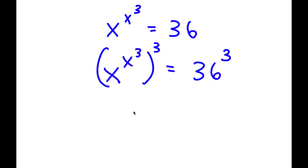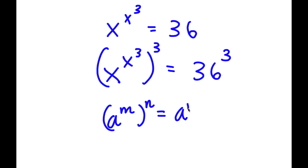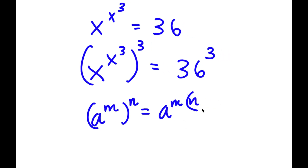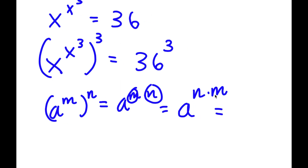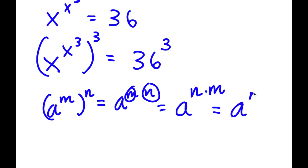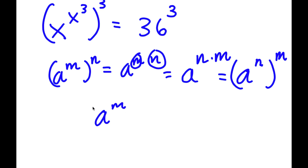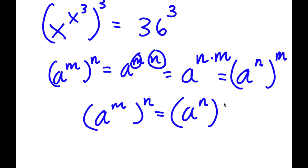Now, if I have something in the form a to the power of m to the power of n, this is equal to a to the power of m times n. And m and n here are interchangeable, meaning this is also equal to a to the power of n times m. So a to the power of m to the power of n equals a to the power of n to the power of m — in simpler terms, we can swap the exponent order.